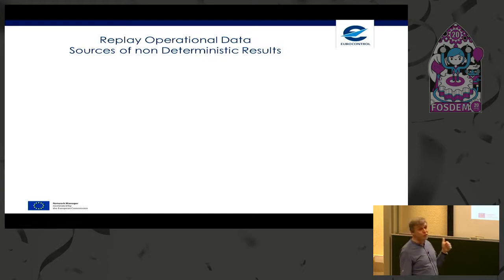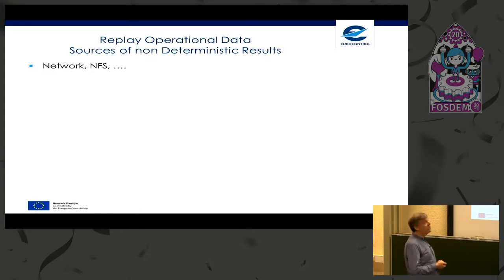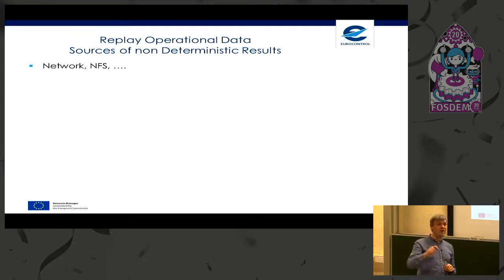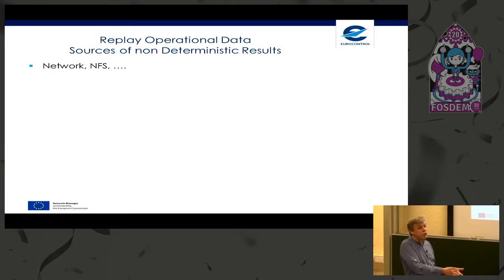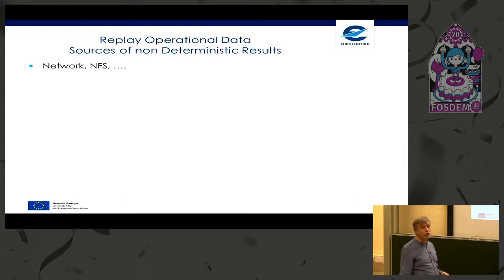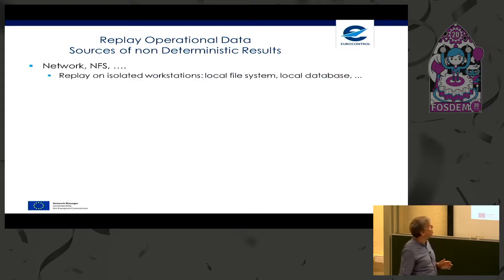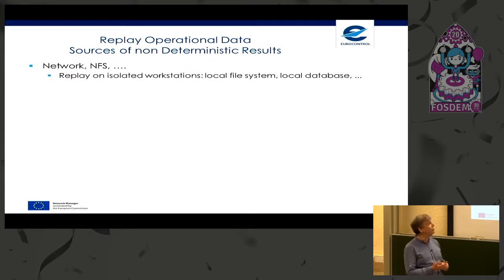We still have to address sources of non-deterministic results. One source is the network — NFS and so on. If database files are on the network, the replay is not the only user, introducing variation much larger than the one percent we want to detect. The solution is easy: we replay on isolated workstations with their local filesystem and local database.